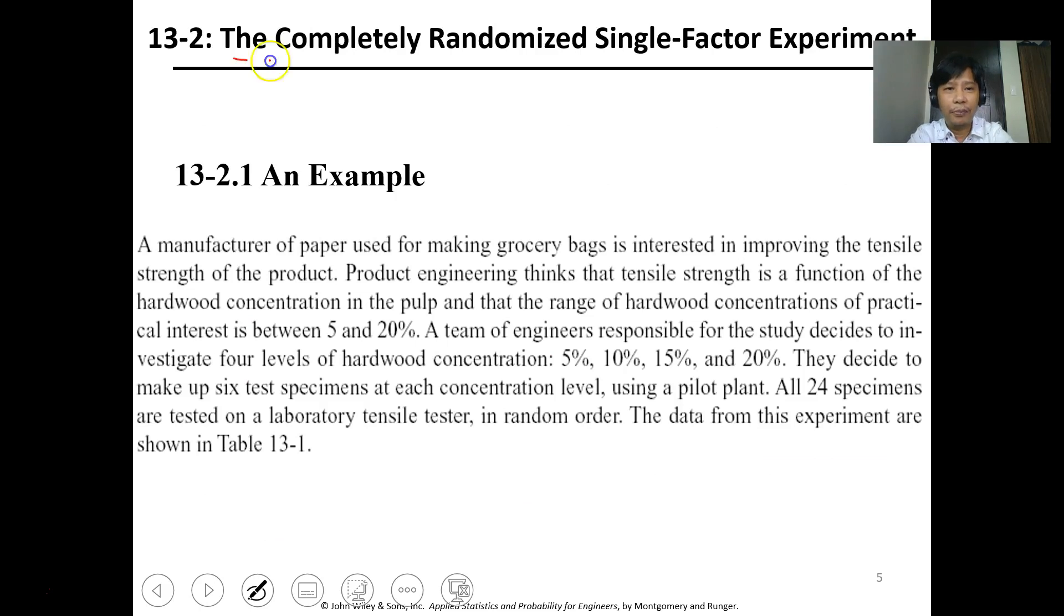The first topic is the completely randomized single-factor experiment. When you say single factor, you are only observing the effect of a single variable. An example is this problem: a paper manufacturer making grocery bags wants to improve the tensile strength of their product. The product engineers think that the hardwood concentration of the pulp could increase the tensile strength. The range of hardwood concentration of practical interest is between 5 and 20 percent.